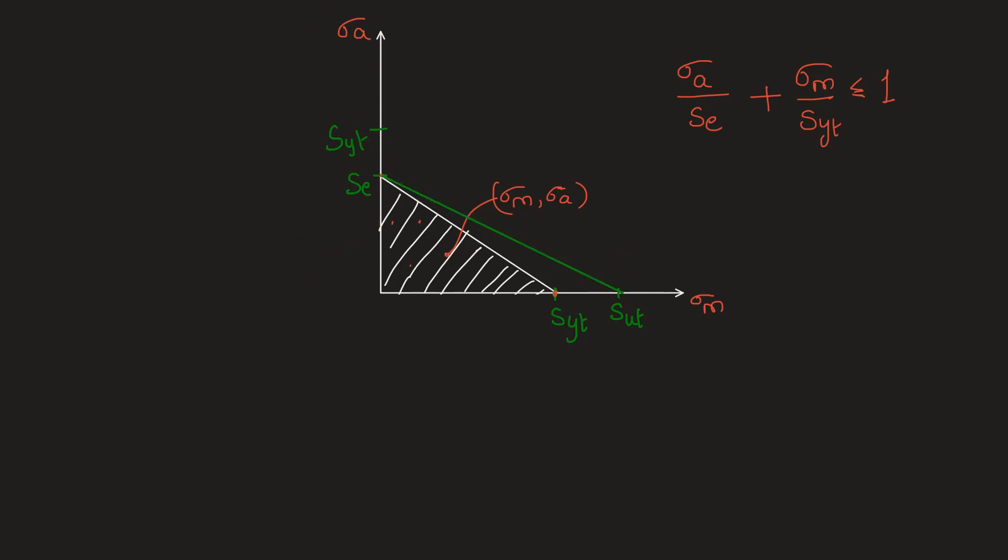Goodman's criteria is given by this line that joins endurance limit and ultimate strength. So here we are estimating the strength to be higher, and all other criteria also belong like this. Gerber's parabola connects SE and SUT using a parabola, something like this.